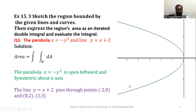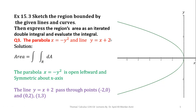This is the graph of the parabola x = -y². In order to plot this graph, note that I have marked the x-axis and y-axis with dotted lines because the x-axis and y-axis are not involved in my boundaries.